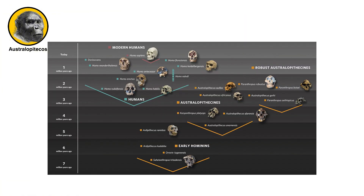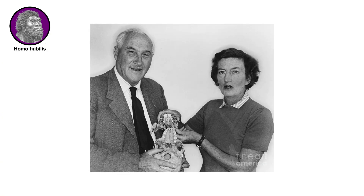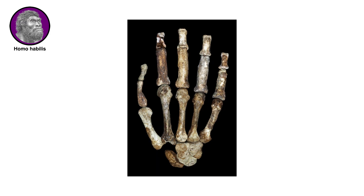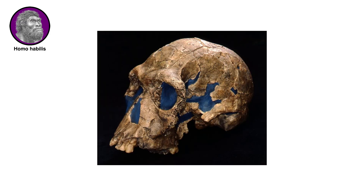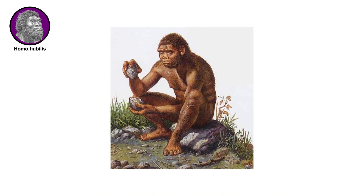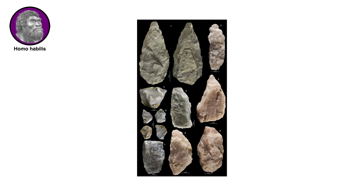Since the discovery of the Taung specimen, many hundreds of specimens from roughly eight species of Australopithecus have been discovered in South Africa. A team led by scientists Lewis and Mary Leakey uncovered the fossilized remains of a unique early human between 1960 and 1963 at Olduvai Gorge in Tanzania. Some scientists declared these fossils a new species and called them Homo habilis, meaning handyman, because they suspected that it was this slightly larger-brained early human that made the thousands of stone tools also found at Olduvai Gorge.